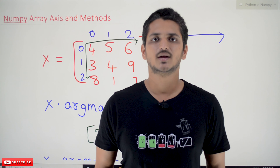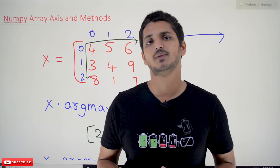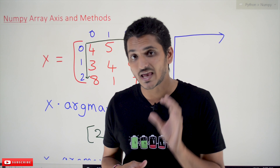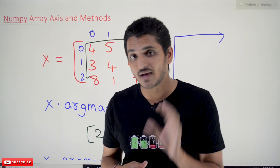Hi, welcome to Learning Monkey. I am Raghu. In this class we will discuss about NumPy array methods and how the axis works — how those methods work on axis. This point is very, very important to understand. In our previous classes we already discussed the basics of arrays and how memory is allocated. This is a continuation class; please follow our playlist from the beginning for better understanding. Coming to today's class, let's take some examples and understand how NumPy array methods work on the axis.